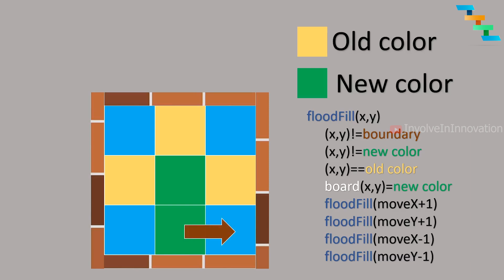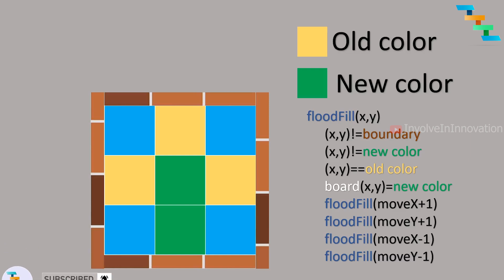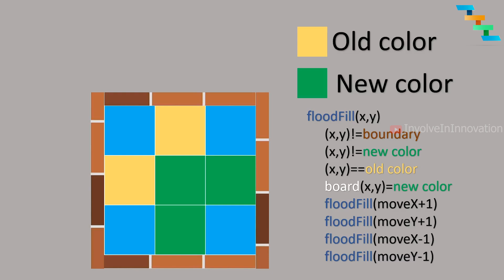Now we perform move y+1, which takes us to position 2,2. Position 2,2 is not the old color, so we terminate that. Then move x-1 takes us to 1,1, but we already changed 1,1 to green so we terminate that. Move y-1 takes us to 2,0, which is blue, so we terminate that. Backtracking, we move y+1 from 1,1, arriving at position 1,2. Position 1,2 is yellow, so we replace it with green. All four directions from 1,2 are invalid, so we go back to 1,1.